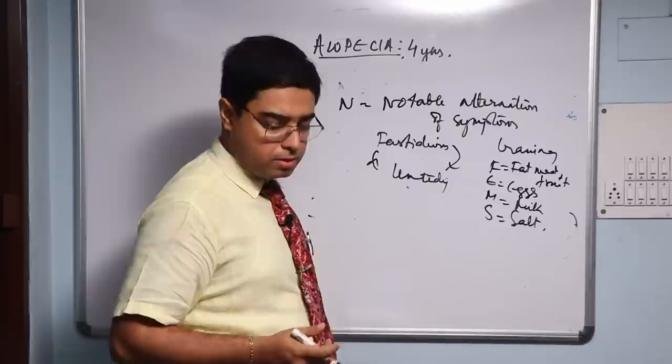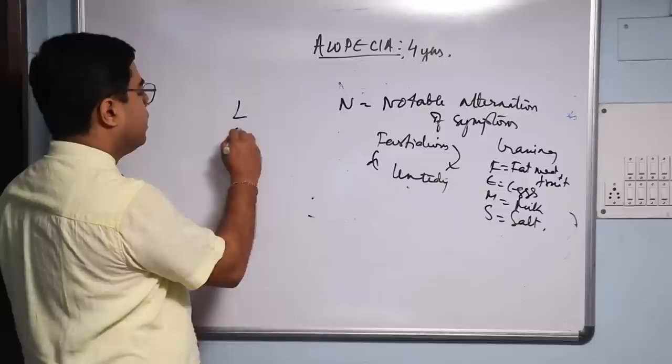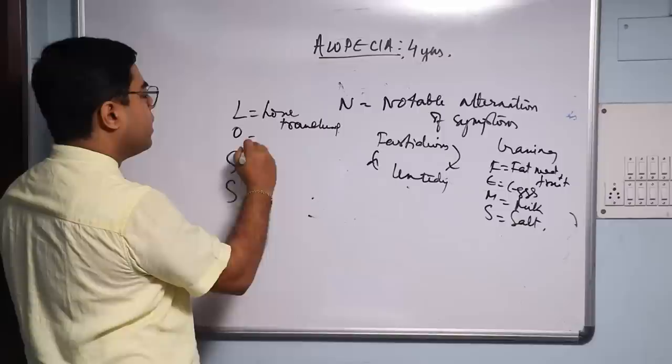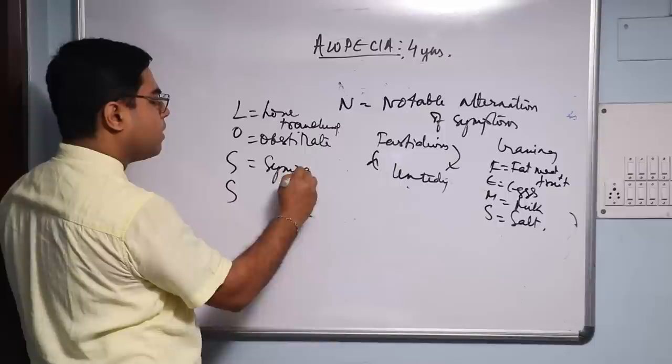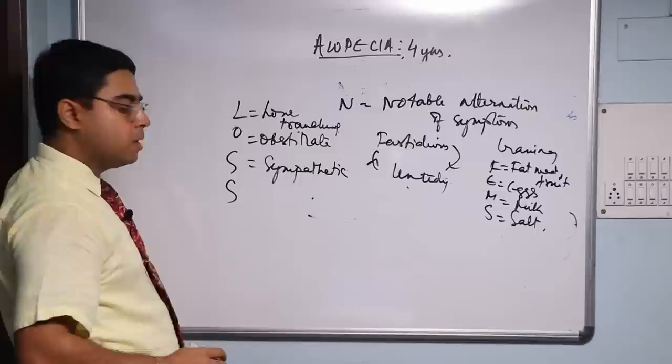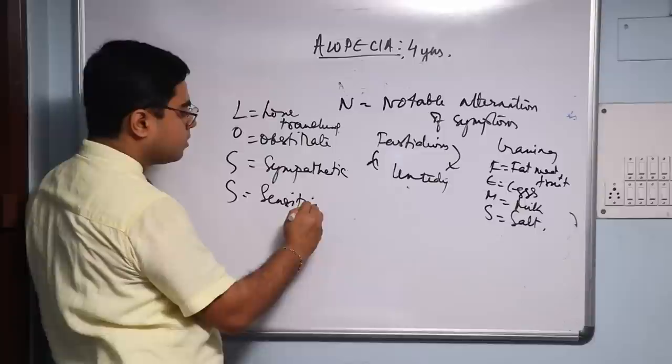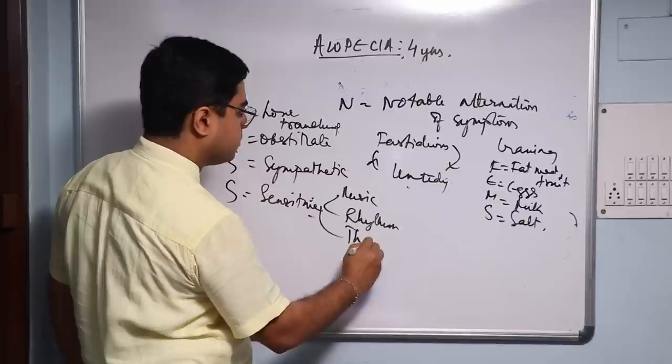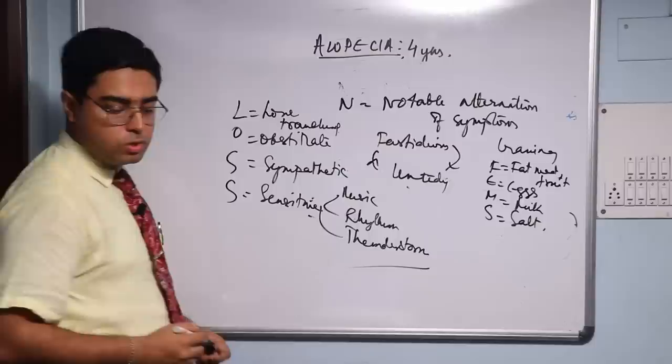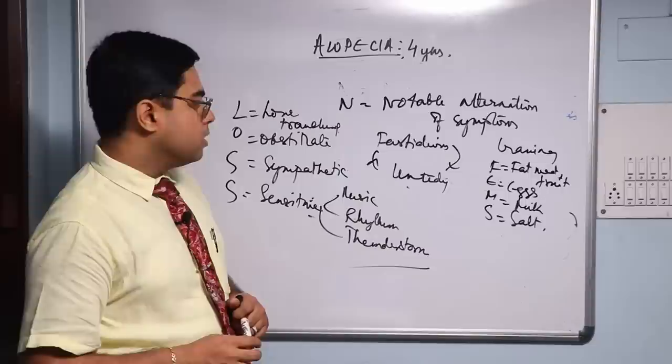But also remember another mnemonic for Carcinosin: LOSS. L - Love of travel, they love traveling like Tuberculinum. O - They can be very Obstinate, also like Tuberculinum. S - They can be Sympathetic like Phosphorus, lot of empathy, lot of compassion like Phosphorus. S - But they can be very Sensitive to music, rhythm, and thunder like Sepia, like Phosphorus as well. Sensitive to music, to rhythm, thunderstorm like Phosphorus as well.